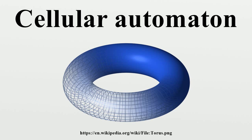These cells are usually handled with a toroidal arrangement: when one goes off the top, one comes in at the corresponding position on the bottom, and when one goes off the left, one comes in on the right. This can be visualized as taping the left and right edges of the rectangle to form a tube, then taping the top and bottom edges to form a torus. This solves boundary problems and is easily programmable using modular arithmetic functions.